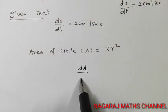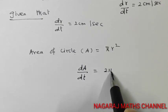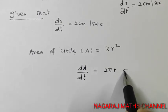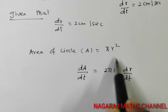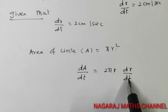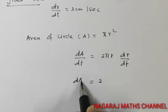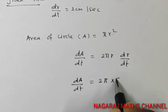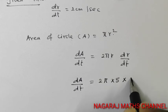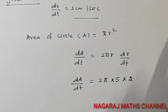Differentiating with respect to t: dA by dt = 2 pi r into dr by dt. Substituting r = 5 and dr by dt = 2.